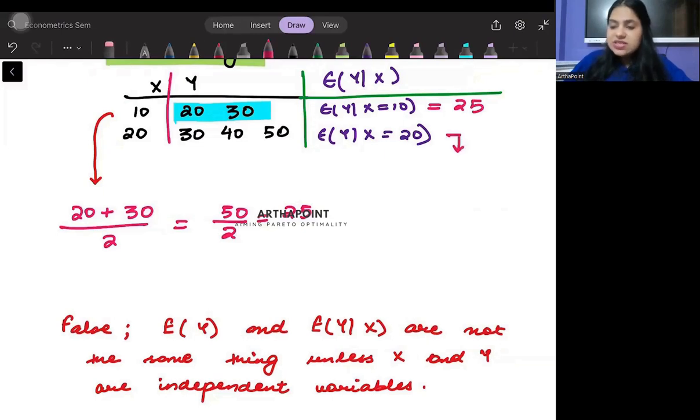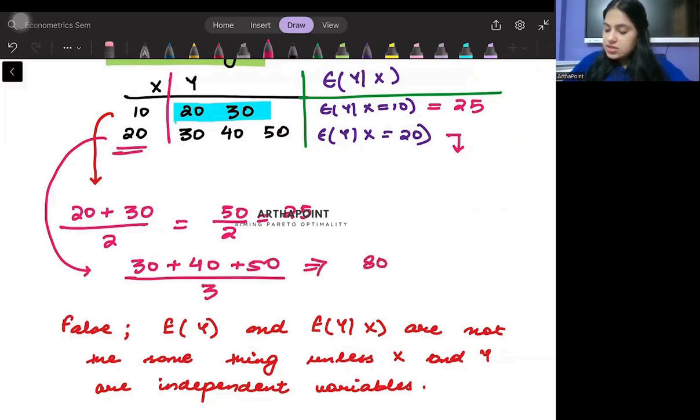What will be E of Y given X is 20? So I will hold X at 20 and I will find the mean as 30 plus 40 plus 50 by 3. And this is going to give me the answer as 80 plus 40 by 3, which is 120 by 3, that means 40. So the expected value of Y in this case will be 40.